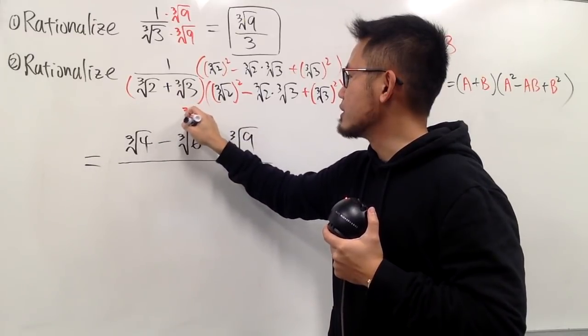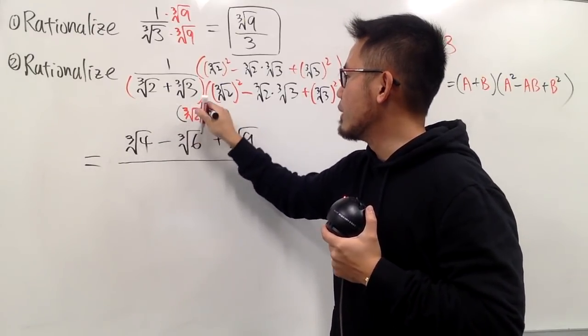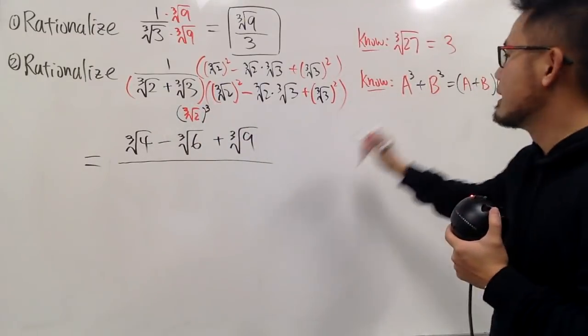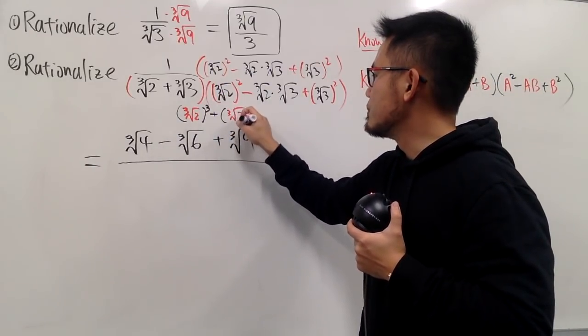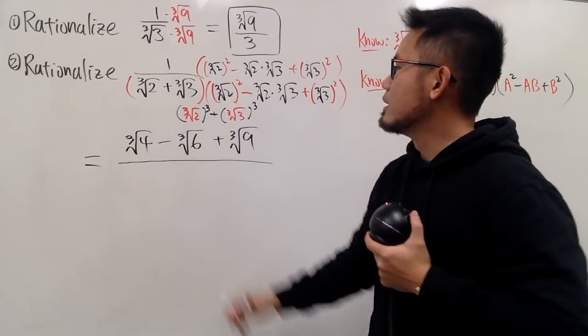We'll just get a to the third power plus b to the third power. So, we get this right here, which is the cube root of 2. And then we write that as the third power, right? And then we add it with the b to the third power, which is the cube root of 3 to the third power.